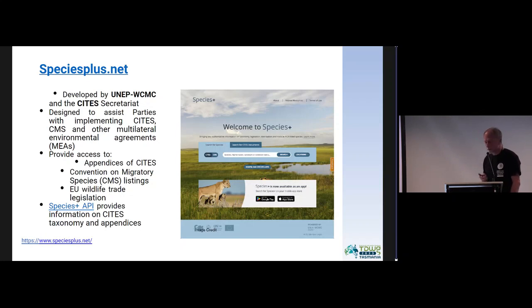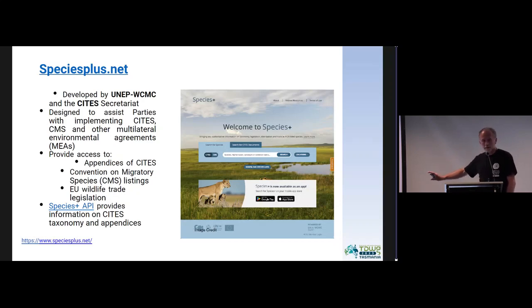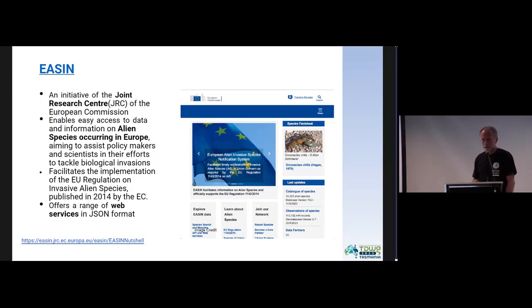However, there are some very good examples in specific areas. For example, CITES and the CMS — the Convention on Migratory Species — and some European trading lists are visible and accessible on the SpeciesPlus website. There are web services where you can get all the information you want, but this is only for this list; there are many others everywhere. Another example is for invasive species — there is also a website with different information and formatting, but you can get JSON data through the web service. Very good, but different from the other one.